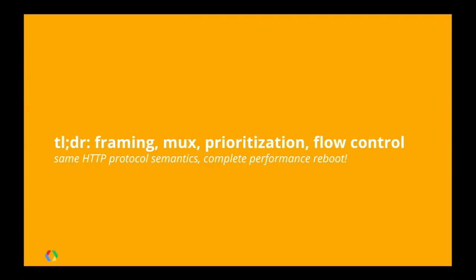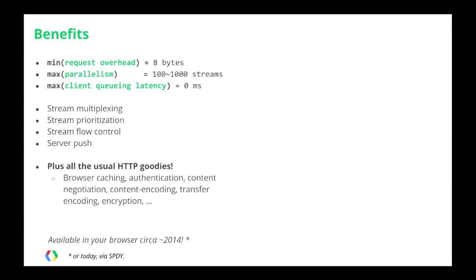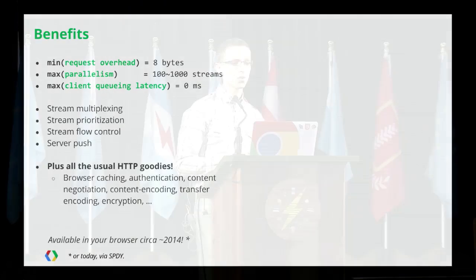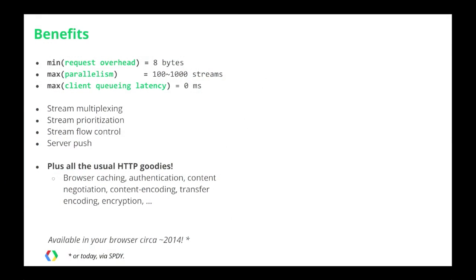That's the short story of HTTP 2. There's framing, free multiplexing, prioritization, and flow control, with big implications for the actual performance of the protocol. A quick recap: the overhead is significantly lower — we're talking a factor of 100 for an HTTP request. Parallelism is effectively unlimited: from tens to hundreds to thousands of streams multiplexed over a single connection. We're eliminating all client queuing latency. We're still inheriting all the benefits of HTTP — transfer encoding, encryption, SSL — we don't have to reinvent these things, we get them for free.